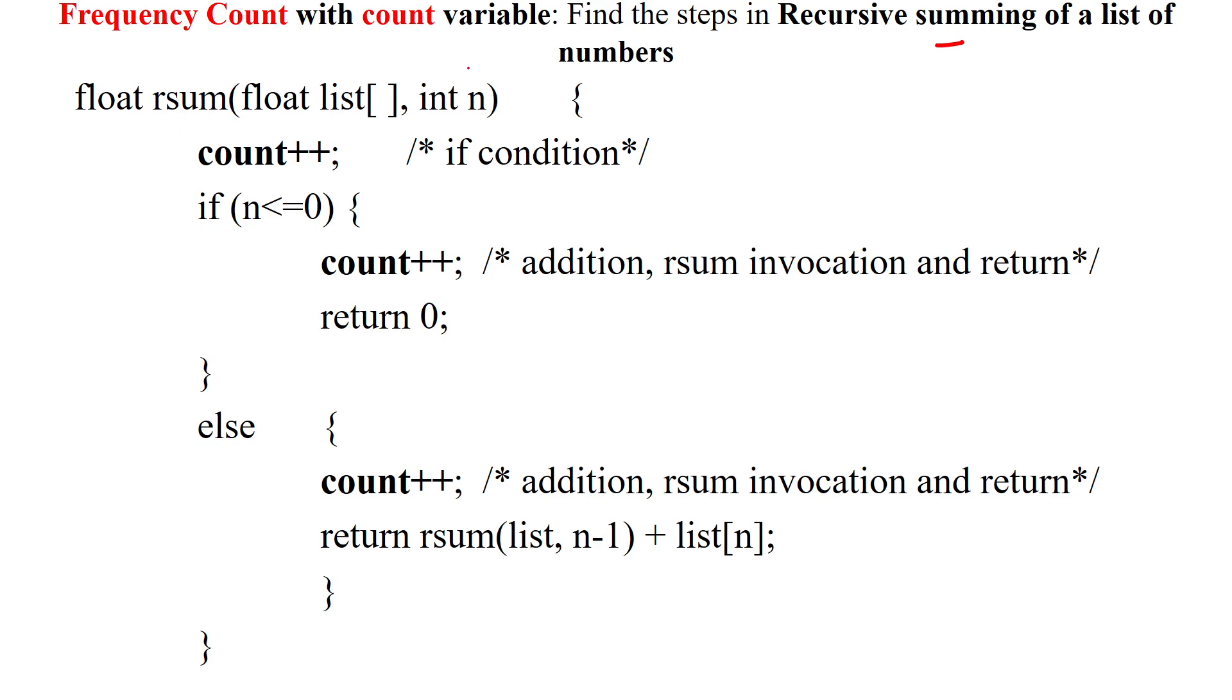So for example, we assume we will take 1 as the number of elements here. Then we are applying an if condition for checking if n is less than or equal to 0 or not. So here it is checking 1 time. n is less than or equal to 0, which is false. So it is consuming 1 unit of time. So we are incrementing the count variable by 1.